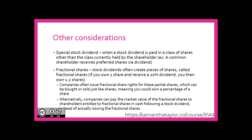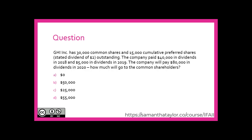Let's look at a practice question. GHI has 30,000 common shares and 15,000 cumulative preferred shares with a stated dividend of $2 outstanding. The company paid $40,000 in dividends in 2018 and $5,000 in dividends in 2019. The company will pay $80,000 in dividends in 2020. How much of these dividends will go to the common shareholders? Is it A) $0, B) $50,000, C) $25,000, or D) $55,000?